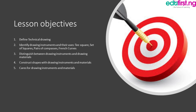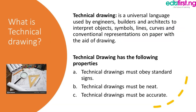Now that we are clear with the learning objective, what is technical drawing? Technical drawing is a universal language used by engineers, builders, and architects to interpret objects, symbols, lines, curves, and conventional representation on paper with the aid of drawing. For example, a building drawing is a product of technical drawing, and your house plan is a product of technical drawing.